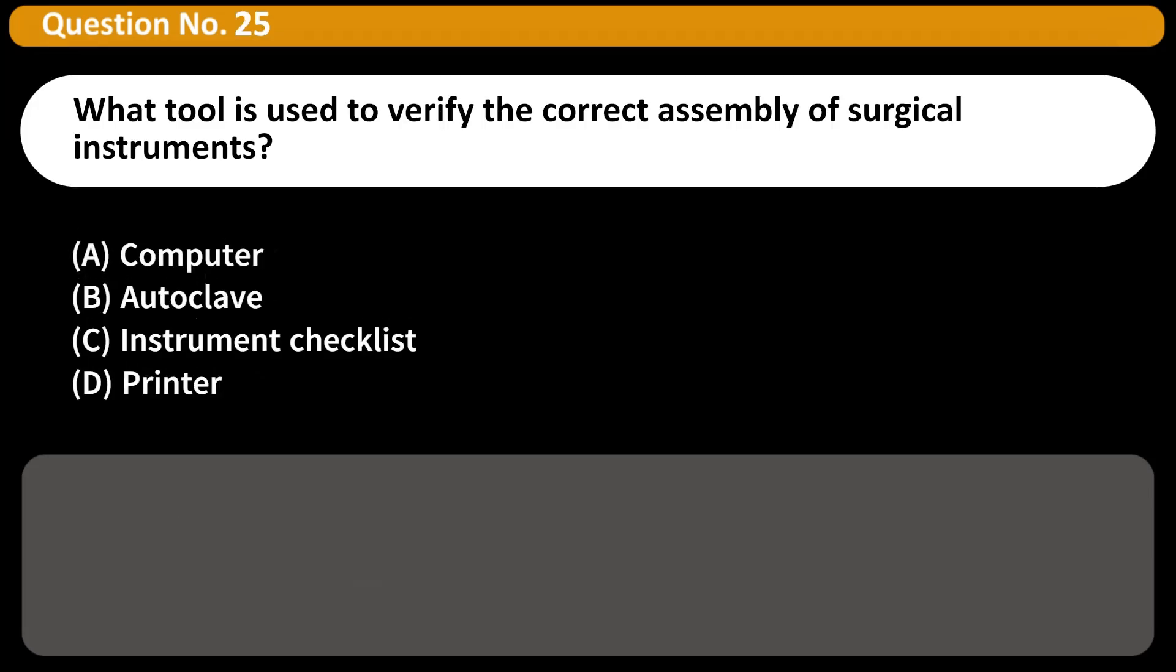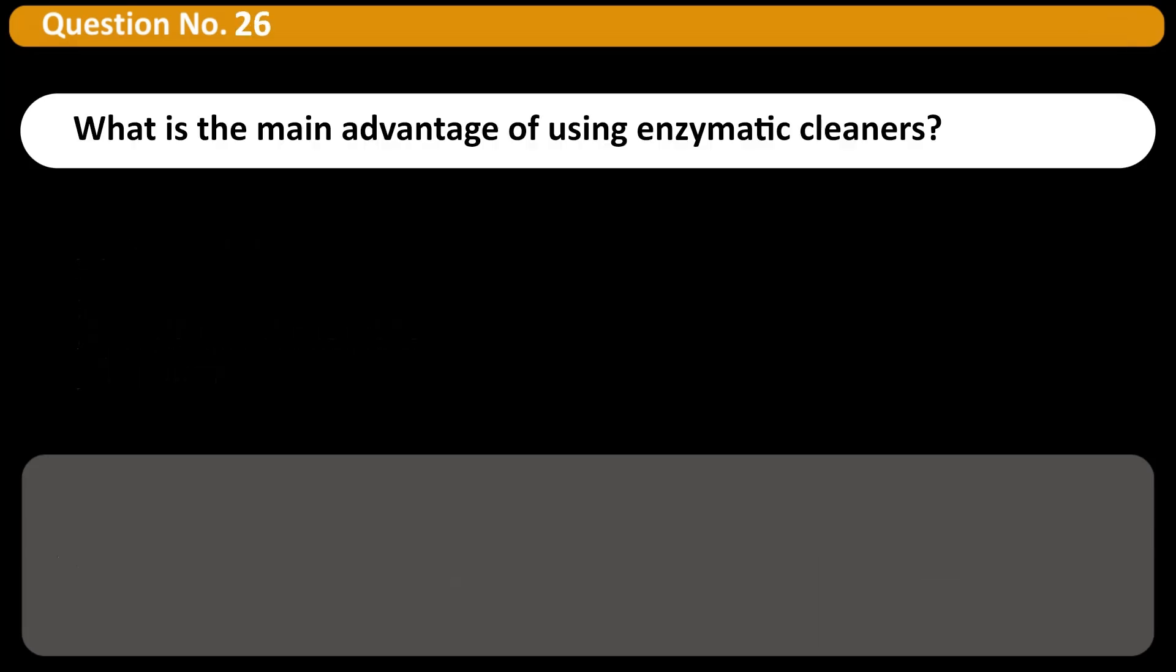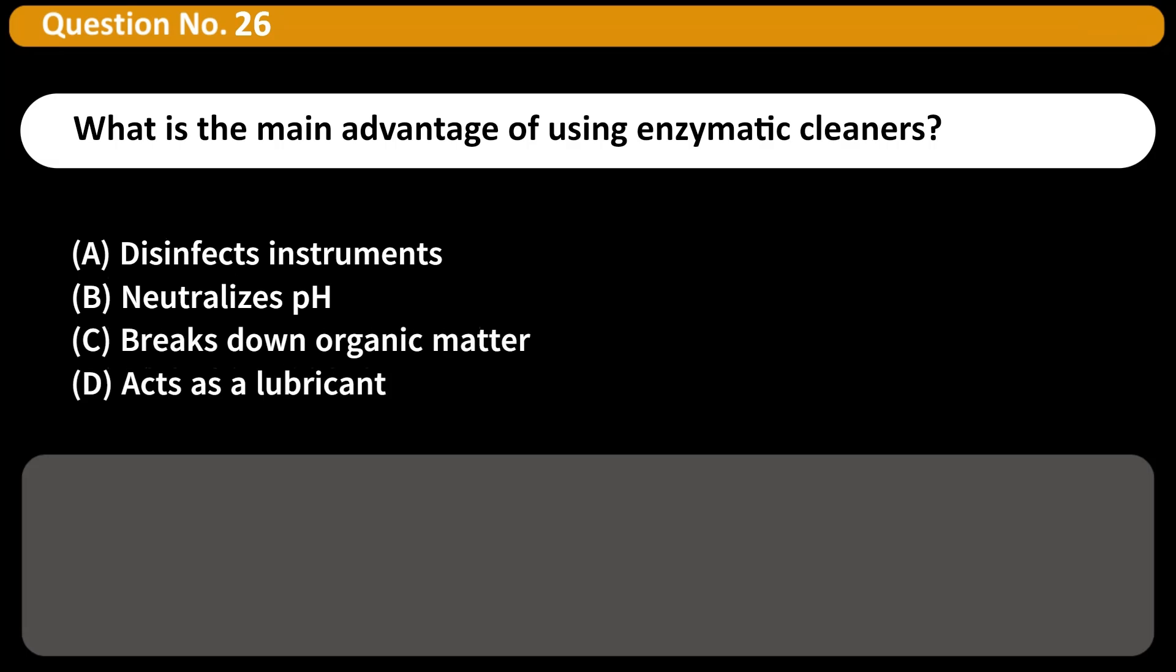What tool is used to verify the correct assembly of surgical instruments? A. Computer, B. Autoclave, C. Instrument checklist, D. Printer. Answer C. A checklist ensures each set is properly assembled before sterilization.